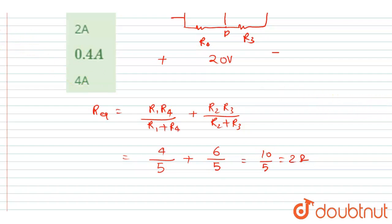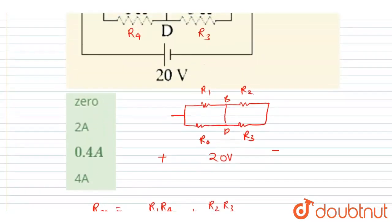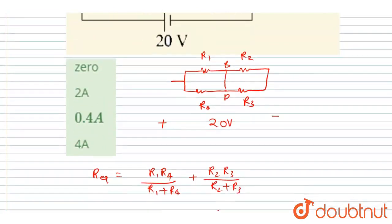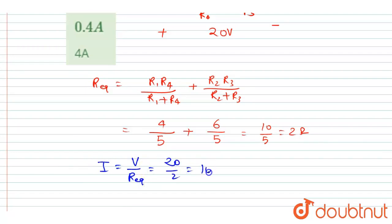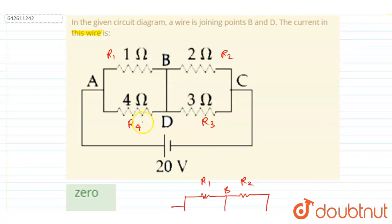Now we can get the current through the battery. I equals V divided by R_equivalent, that is 20 divided by 2, which equals 10 ampere. So the current through the battery is 10 ampere.